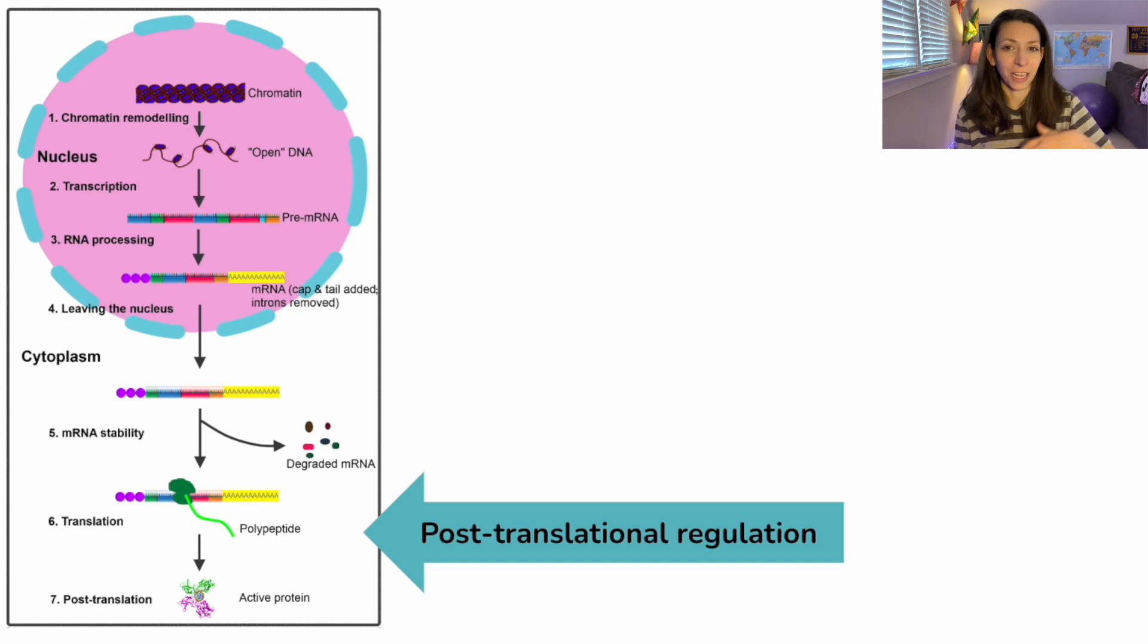After translation happens, so mRNA has arrived at the ribosomes, we have our amino acids joined together through peptide bonds. There can be modifications of those proteins, like phosphorylation or even degradation too. Those proteins can be broken down by proteasomes. And so all of these factors together can contribute to the regulation of gene expression in eukaryotic cells.